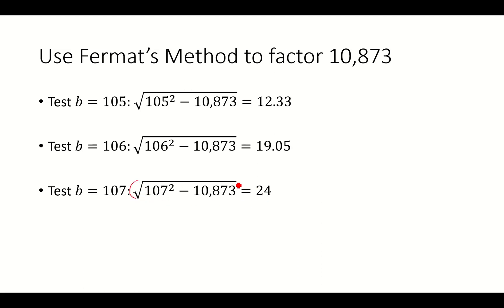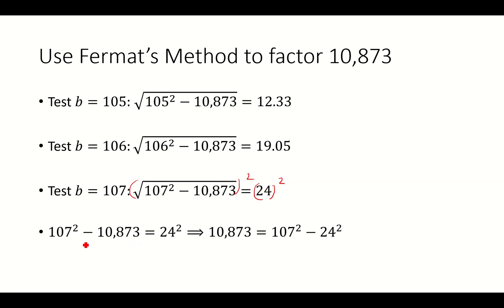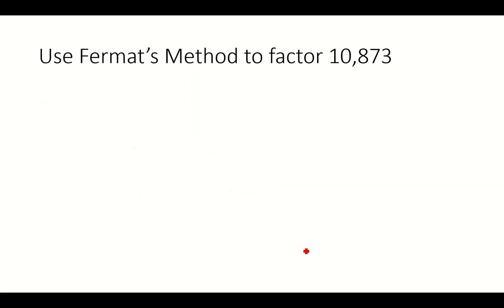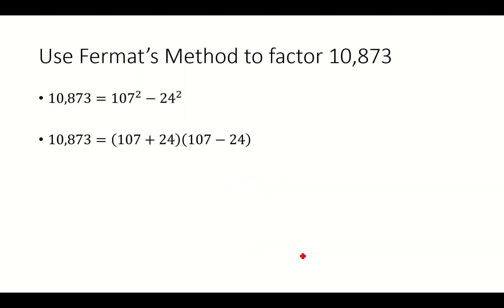We'll square both sides — the square root cancels with the square. We have 107 squared minus 10,873 equals 24 squared. Solving, 10,873 equals 107 squared minus 24 squared. This is the form n equals a squared minus b squared, which we can factor further into 107 plus 24 times 107 minus 24, giving us 131 times 83. And those are our two factors.